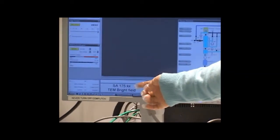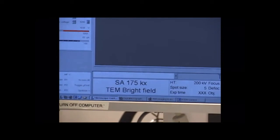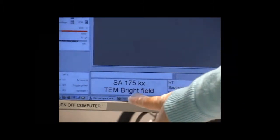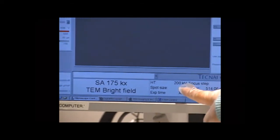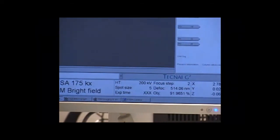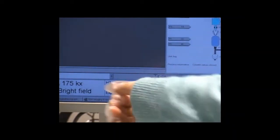In the User Interface software, the box on the lower left tells the magnification and the microscope mode. Currently, TEM bright field and 175,000 magnification. To the right, the beam energy and spot size are shown. While setting up, the spot size will be 5, and during operation, it will be 3. The exposure time tells you the brightness and illumination of the beam.